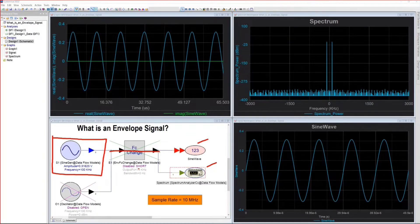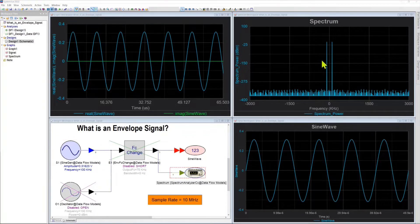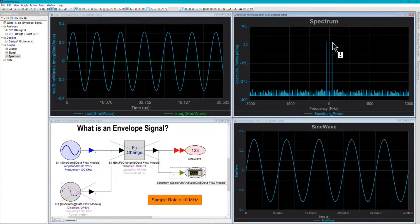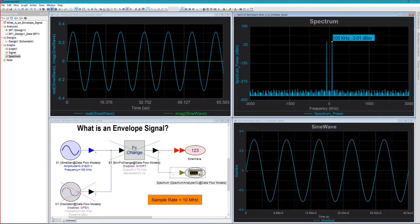And when we do that, we get the picture on the screen where the spectrum looks like this, there's a signal at 100 kilohertz and the sine wave is represented down here. This is what the sync captured, exactly what we would expect.